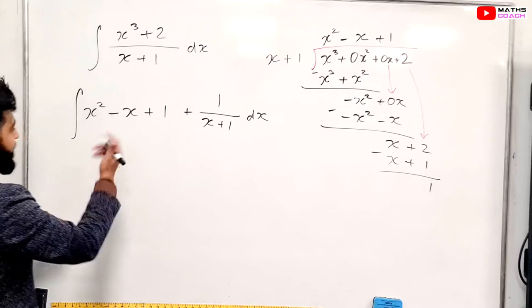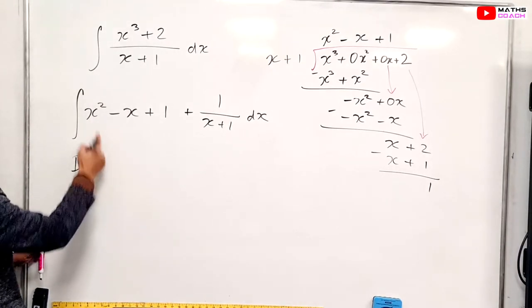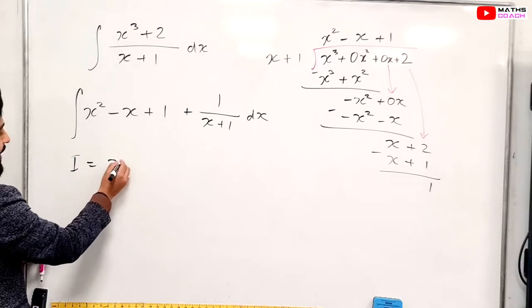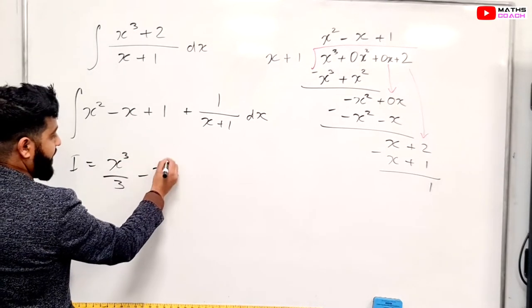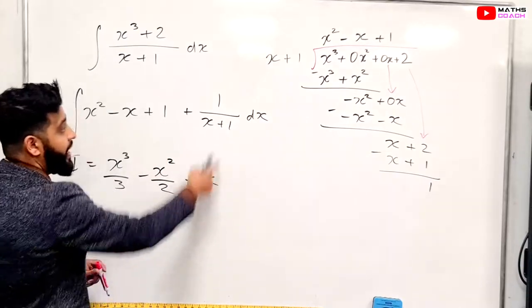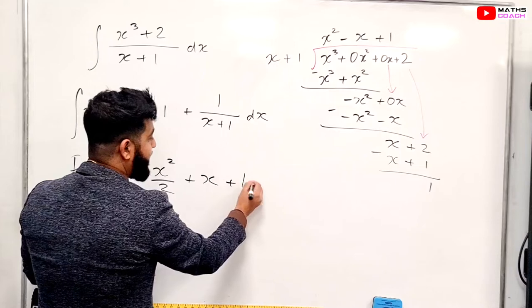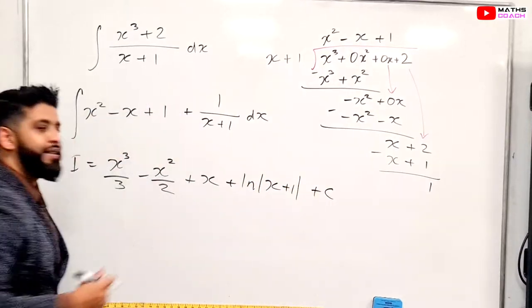So the integration of this now, let's quickly do that. Integration of this please. We get x cubed divided by 3. Here we get minus x squared divided by 2. Here we get just plus x and here we have ln, so ln x plus 1 plus c and that is the integration of that.